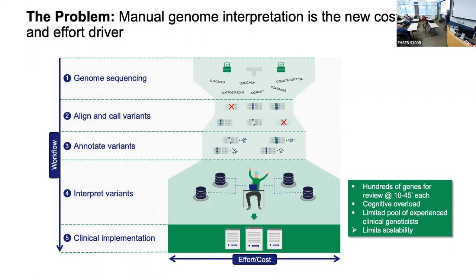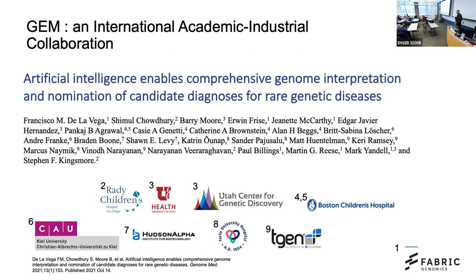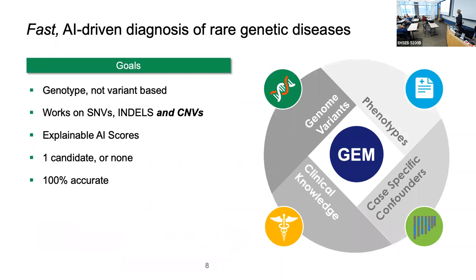GEM began as an international academic-industrial collaboration with eight different groups around the world, motivated by throwing AI at the problem to speed up interpretation and make things more scalable. The project was primarily organized by Fabric Genomics, with various academic groups contributing data, analysis, and discussion.